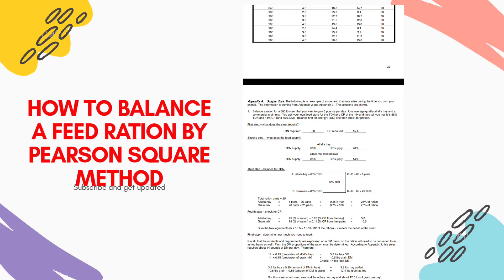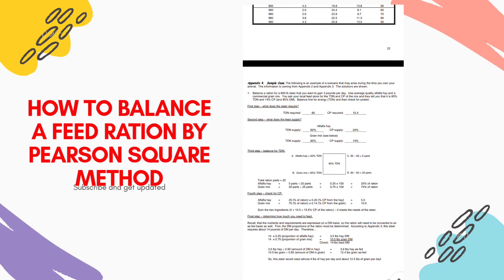In the case of alfalfa: 80 minus 60 is 20 parts, and for grain mix: 85 minus 80 is 5 parts. This tells us we should feed alfalfa hay in 5 parts and grain mix in 20 parts. Converting to percentage: 25% of the ration should be alfalfa hay and 75% should be grain mixture, to achieve an average daily gain of 3 pounds from a 600-pound steer.